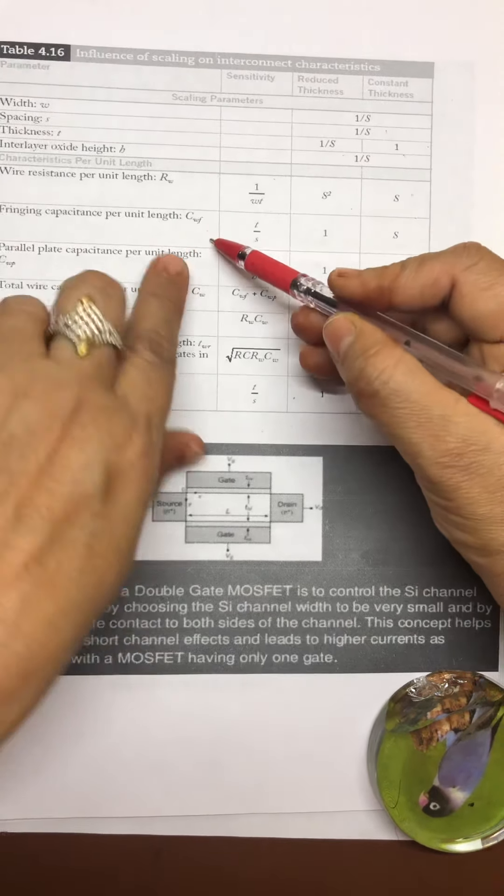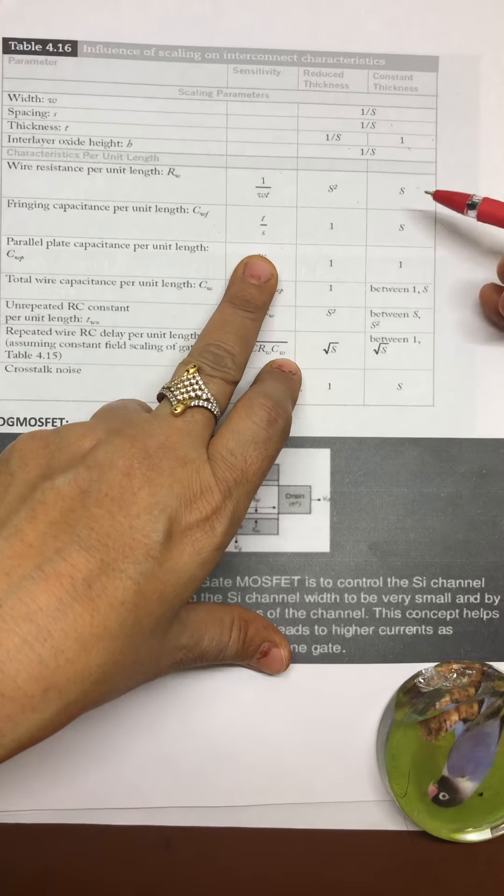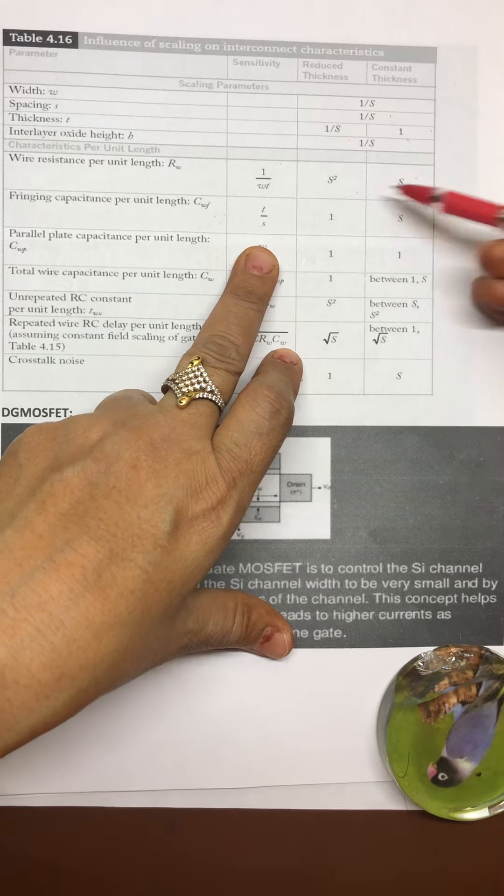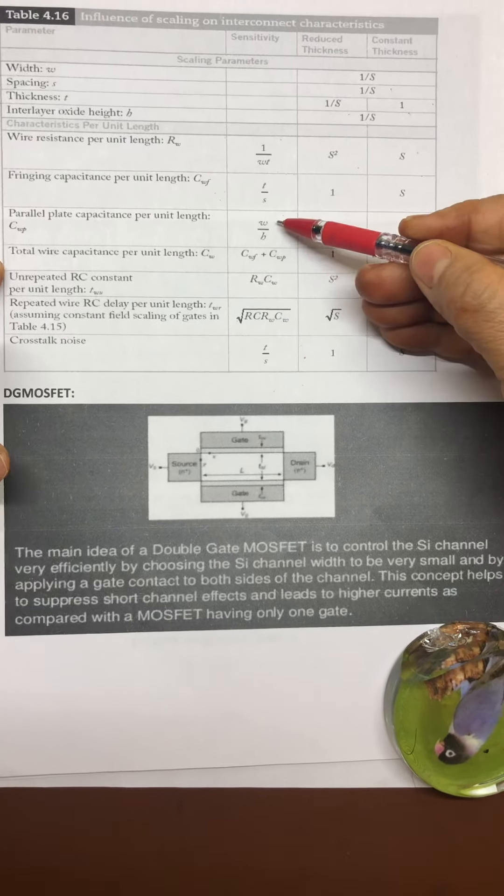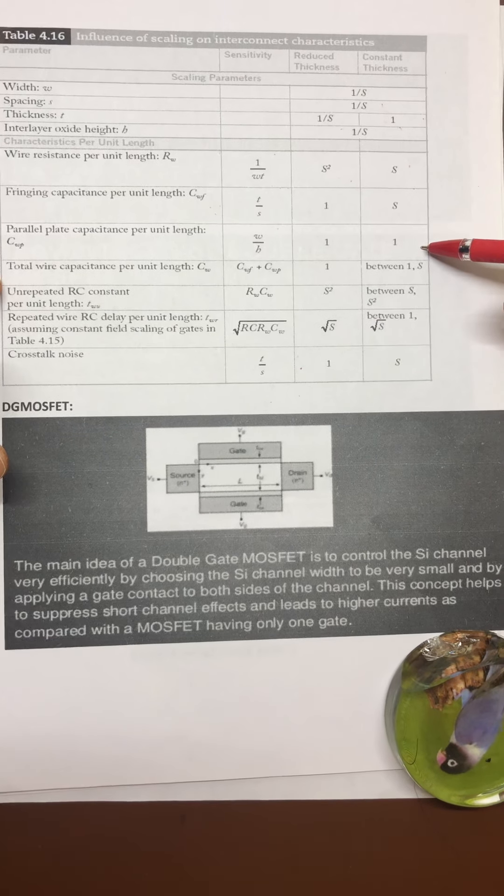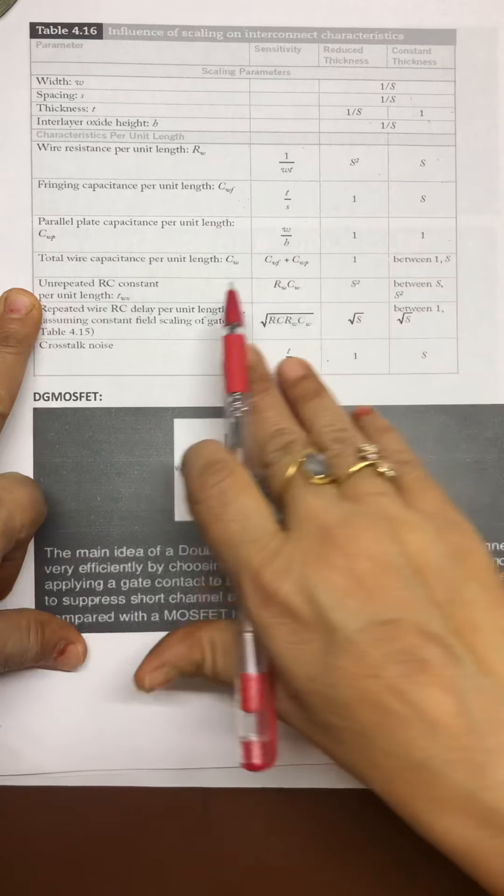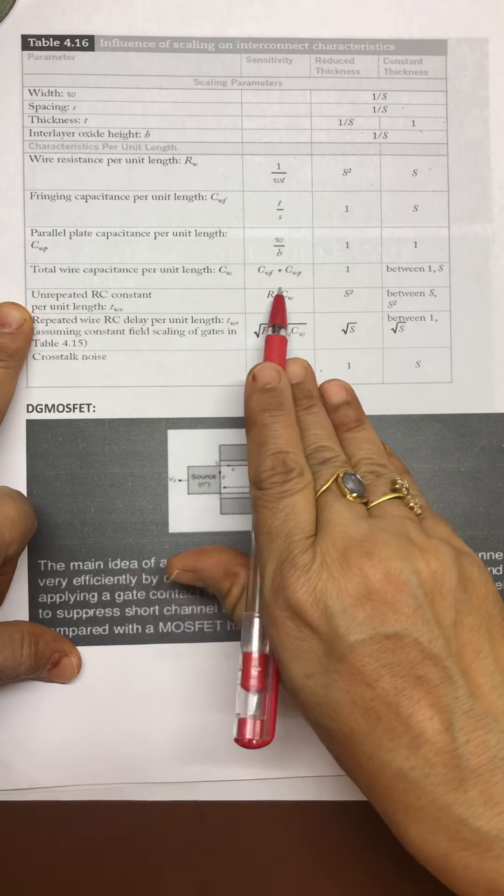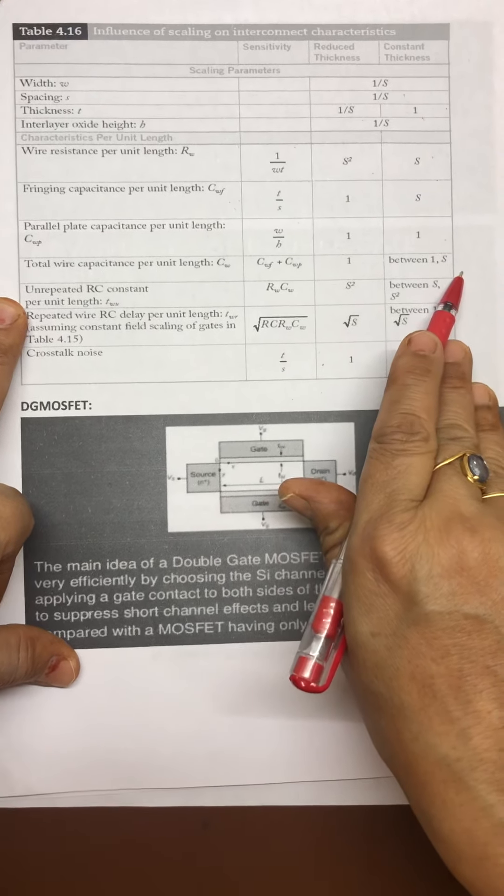Fringing capacitance per unit length, that is C_omega_F, that is T upon S, and their changes are like this. Total wire capacitance per unit length, that is C_omega_F plus C_omega_P, that is between 1 and S.